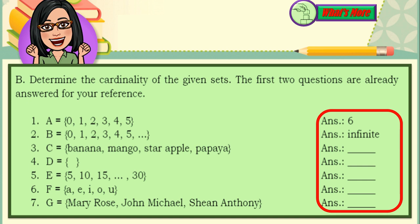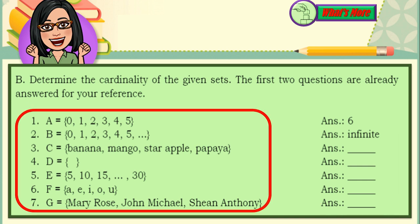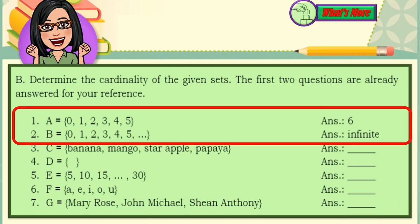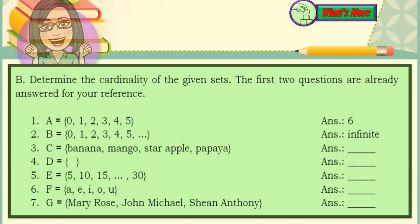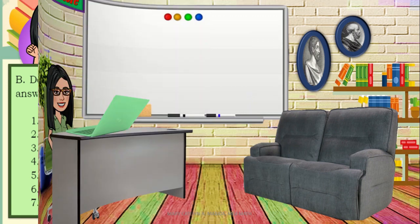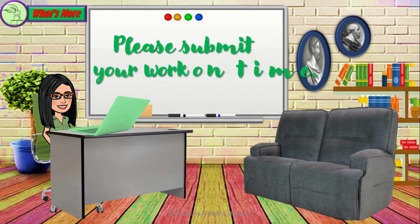This part lists the seven sets and their cardinalities. Set A contains numbers 0, 1, 2, 3, 4, and 5 — the cardinality is 6. For set B, we have 0, 1, 2, 3, 4, 5, and so on, which means it is infinite. You can answer this in a separate sheet of paper. Please submit your work on time.